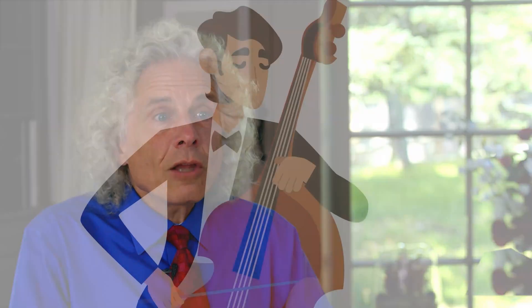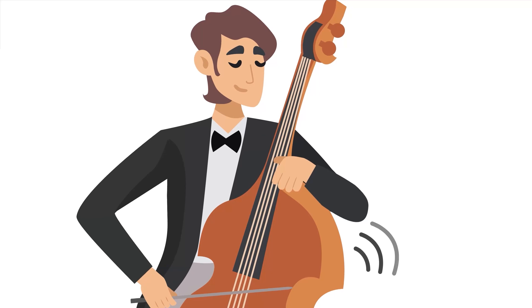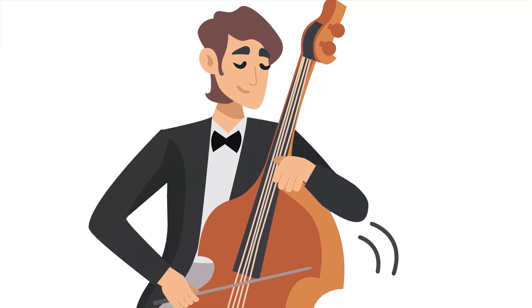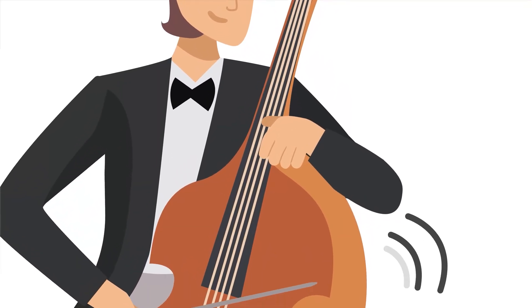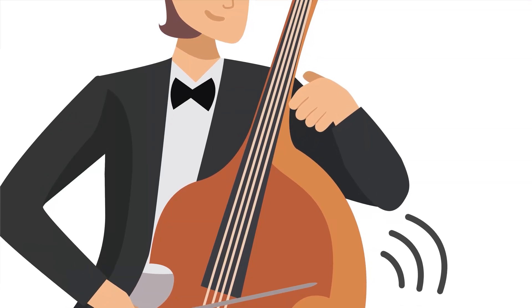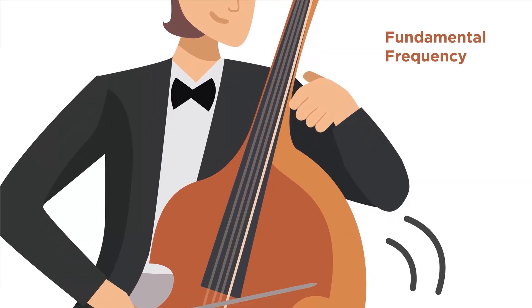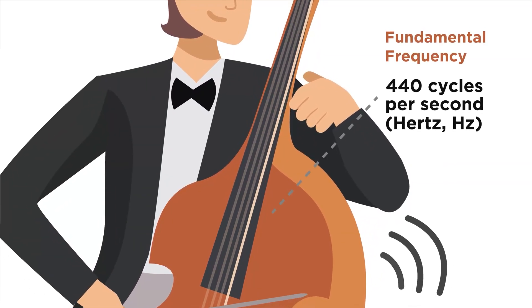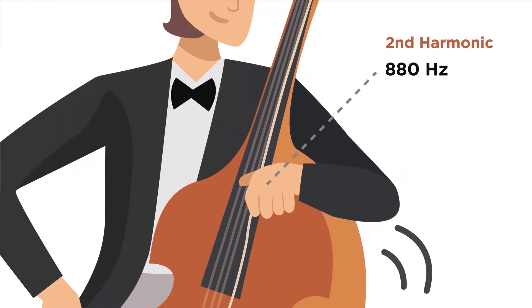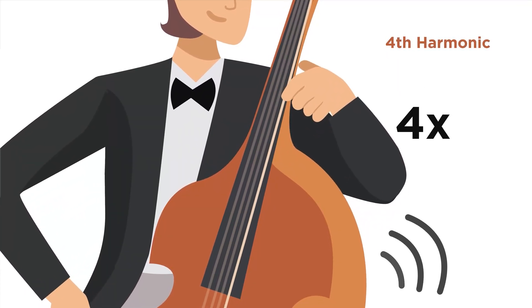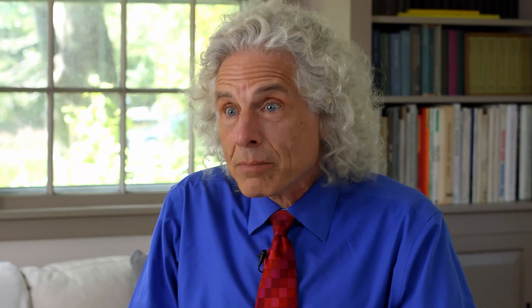It comes from a basic law of physics: when a long object vibrates — a string is plucked, a column of air vibrates — it not only gives off vibrations at a fundamental frequency, say 440 cycles per second, but also at multiples: 880, three times, four times, and so on. But not always perfect multiples, and everything is happening at once.